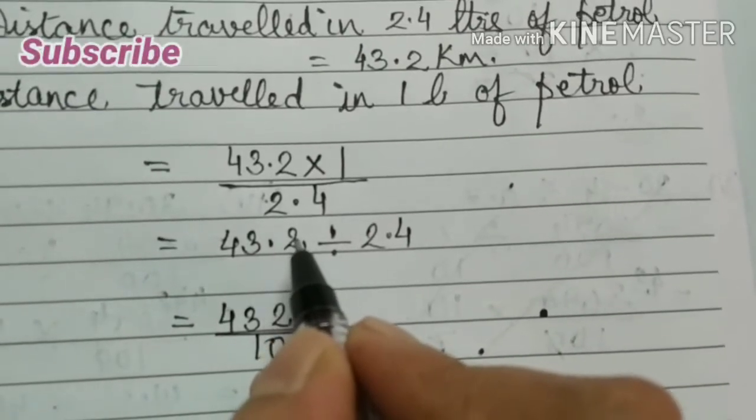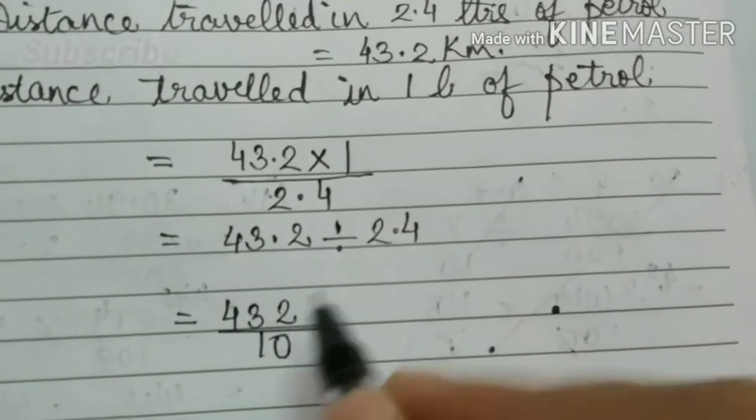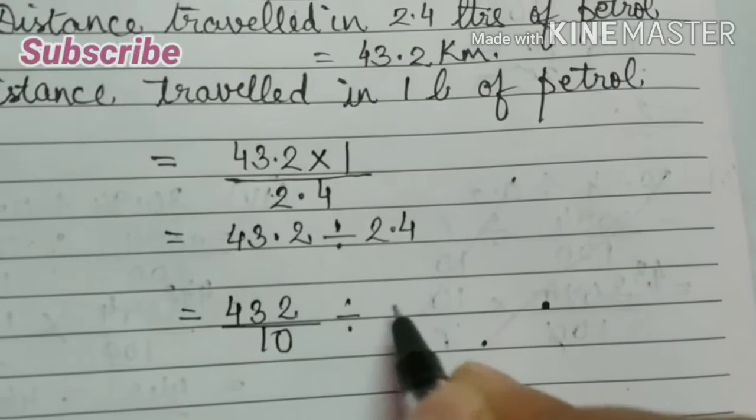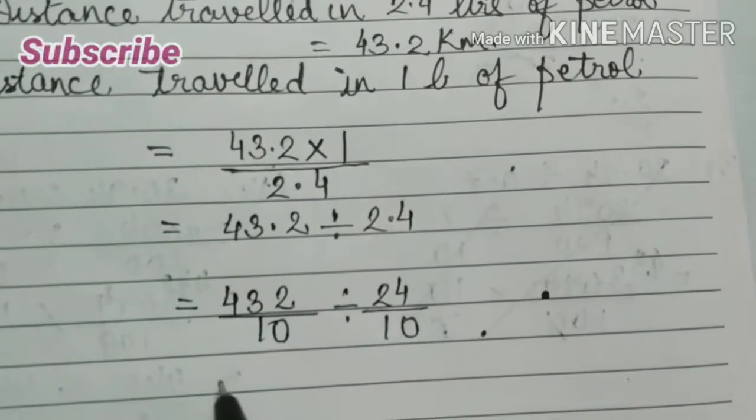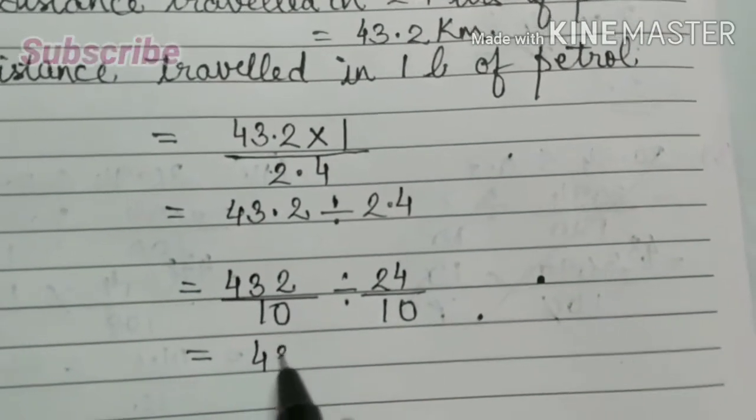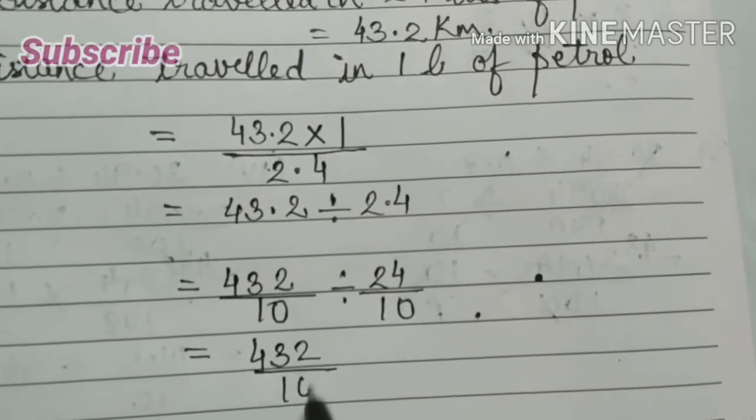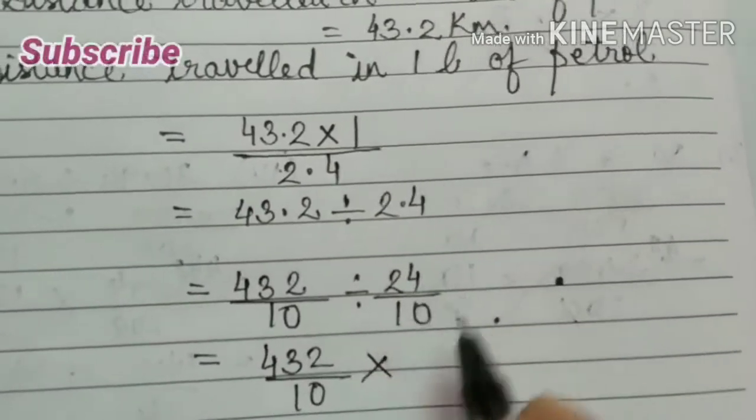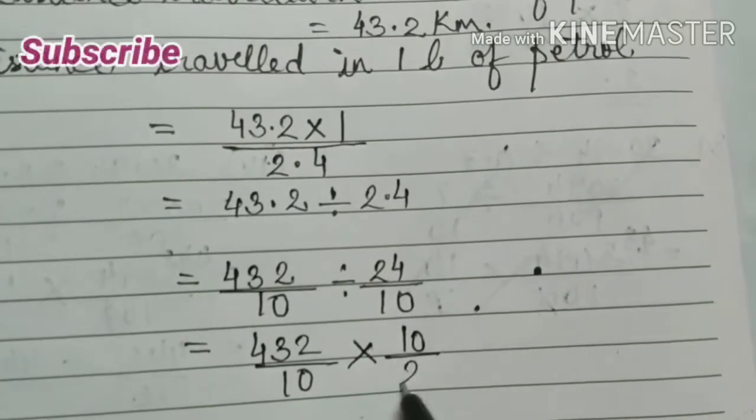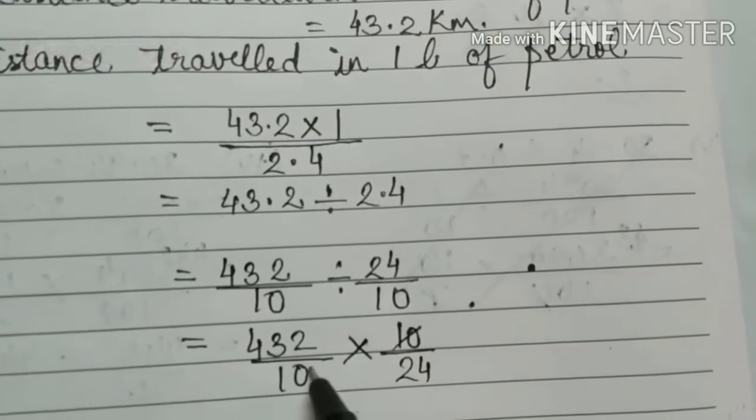Here only one digit after decimal, so by 10, divided by 24 by 10. So 432 by 10 into reciprocal of this, 10 by 24. So 10 cancels.